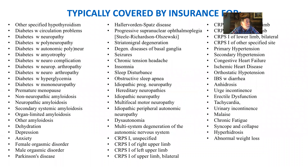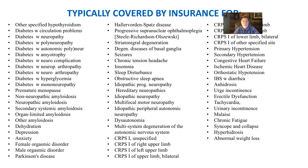Now, these are the ICD-10 codes covered by insurance for doing ANS testing — everything from diabetes with peripheral circulatory problems to depression. It might be that the patient is having super high parasympathetics causing depression. It makes more sense to test this and find out, so you can address the cause of the problems.